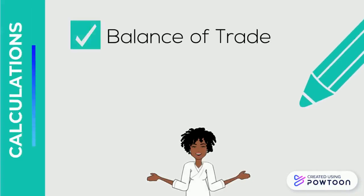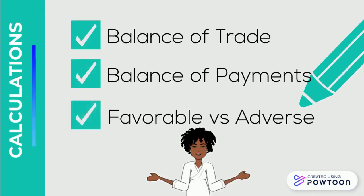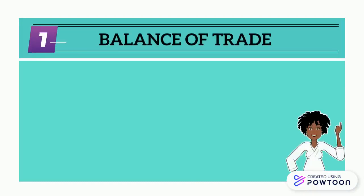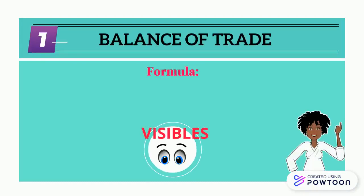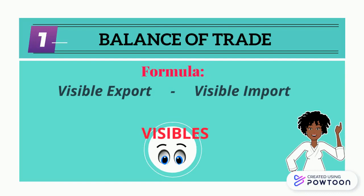Today we're going to look at the balance of trade, balance of payments, and whether those balances are favorable or adverse. The balance of trade is known as our visible balance because we take our visible exports — our goods sold — and subtract our visible imports, which are the goods that we bought from another country.